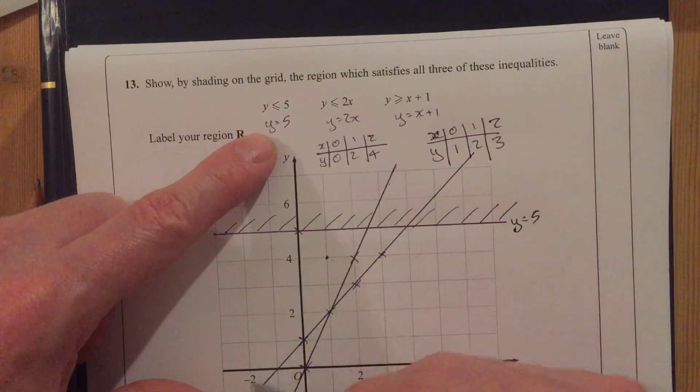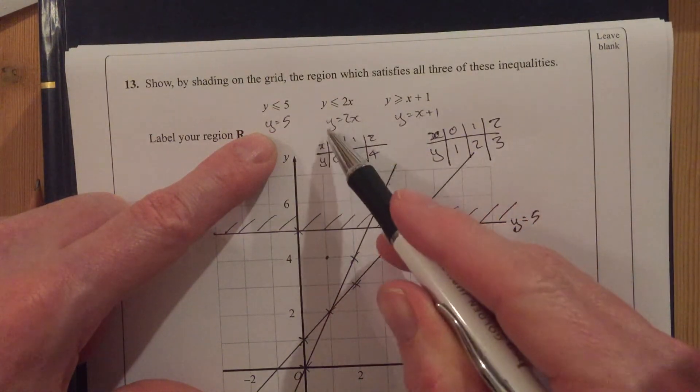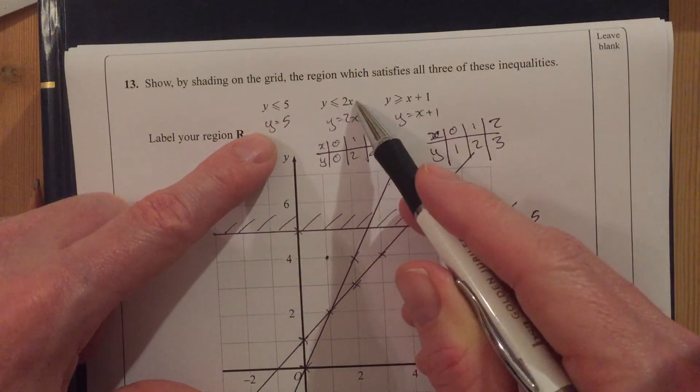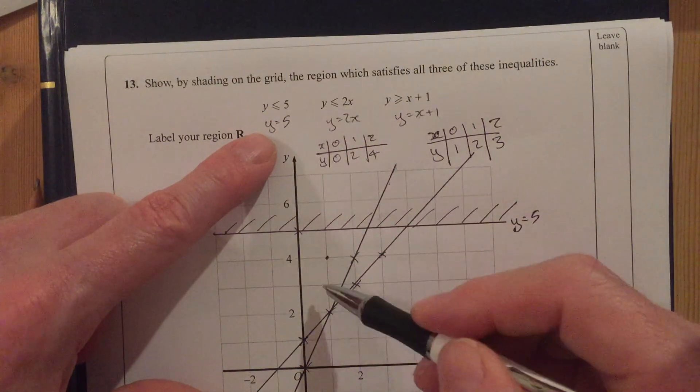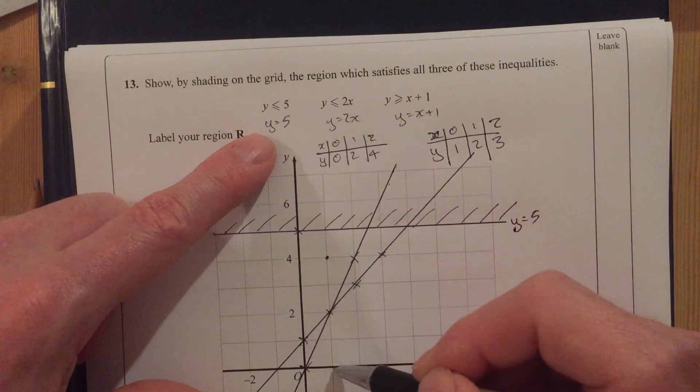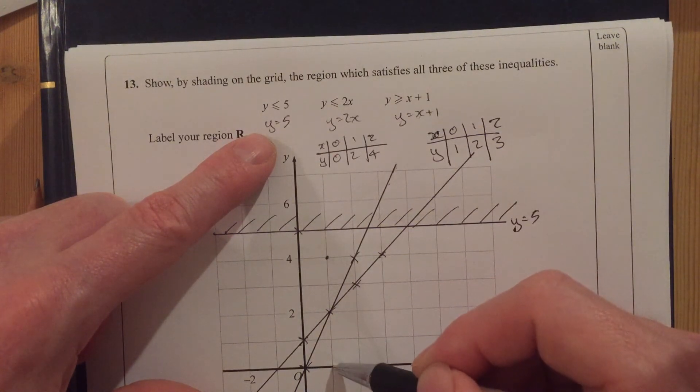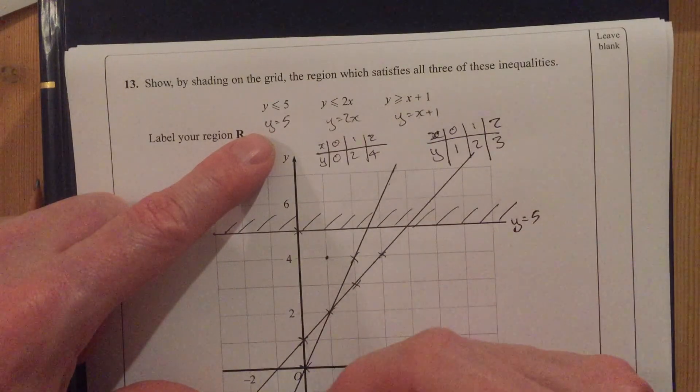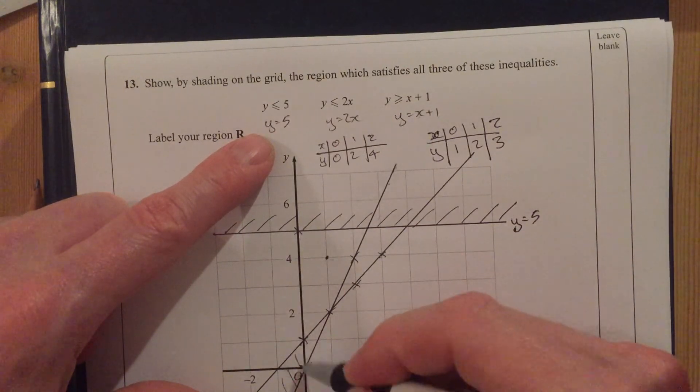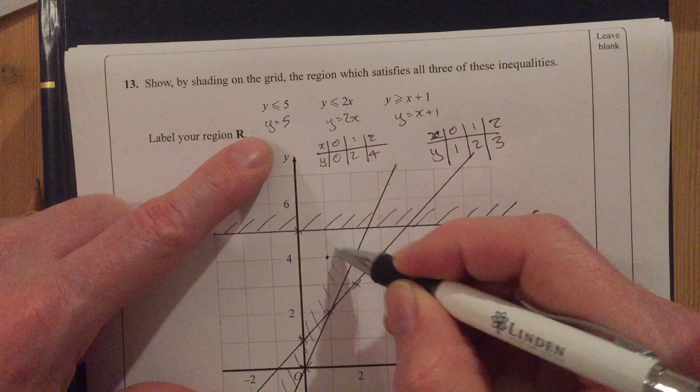So let's consider this 2x line. y is less than 2x. Well, y is 4. And x is 1. So 2x, 2 times 1 is 2. Is y less than that? No, it's not. So I don't want this side. I don't want this side of that line.